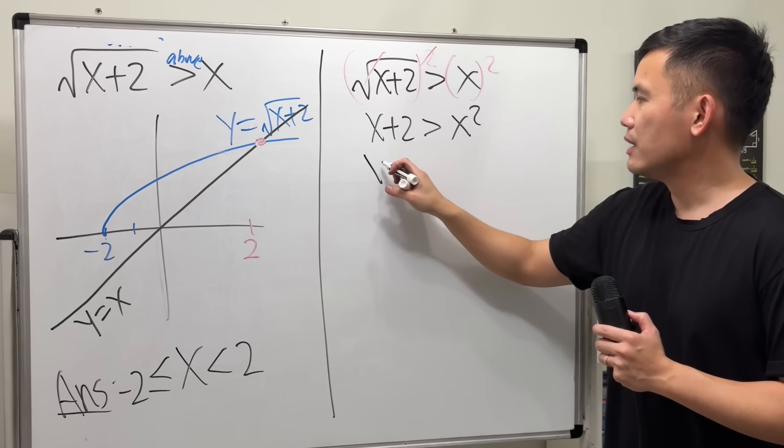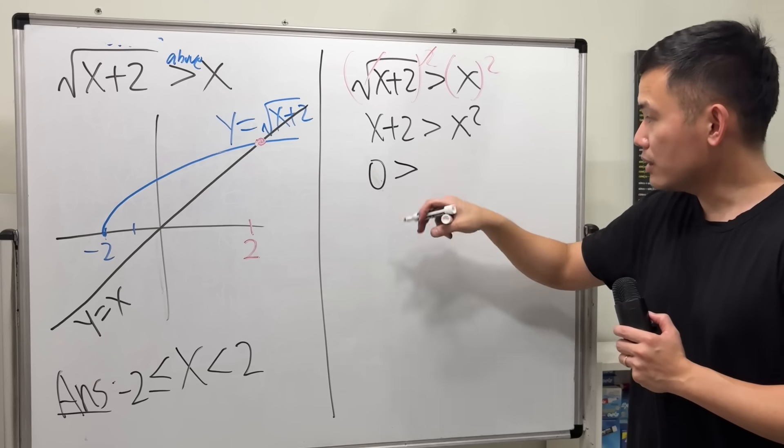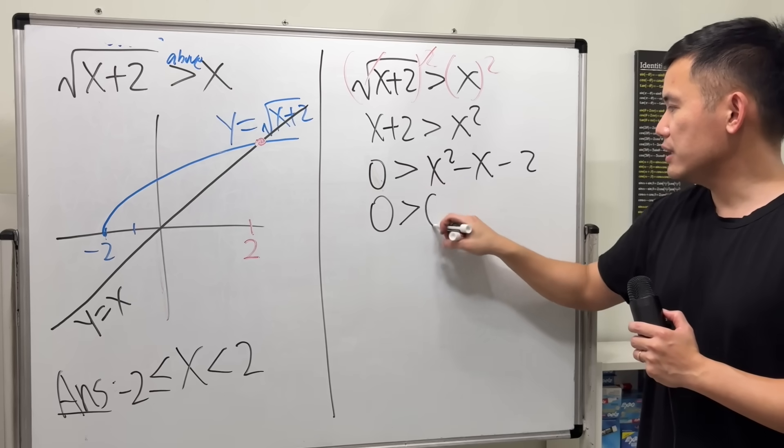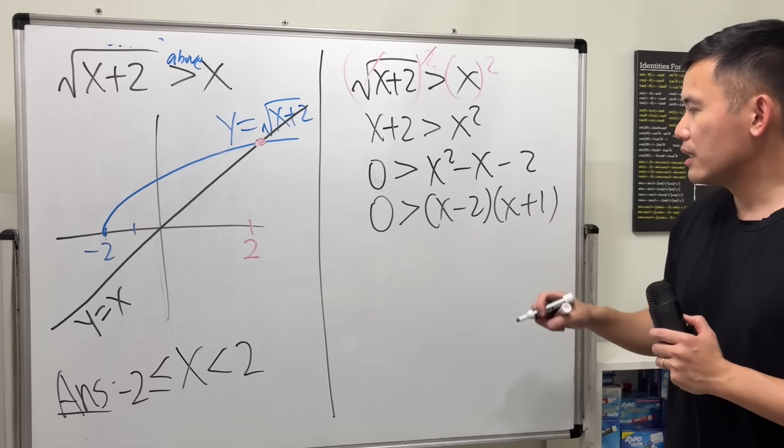And perhaps move these two terms to the other side. So we have, let me just keep the 0 here, and then, greater than x squared, minus x, minus 2. And then factor it, we get x minus 2, and x plus 1.